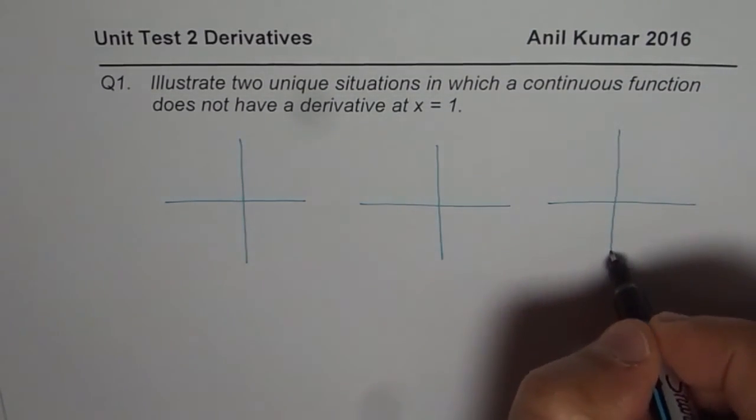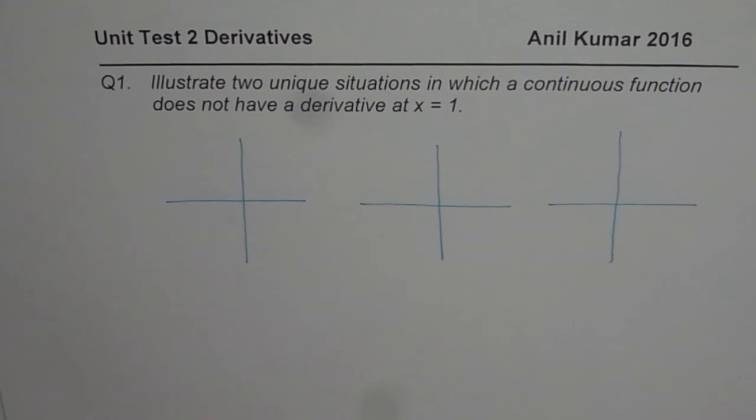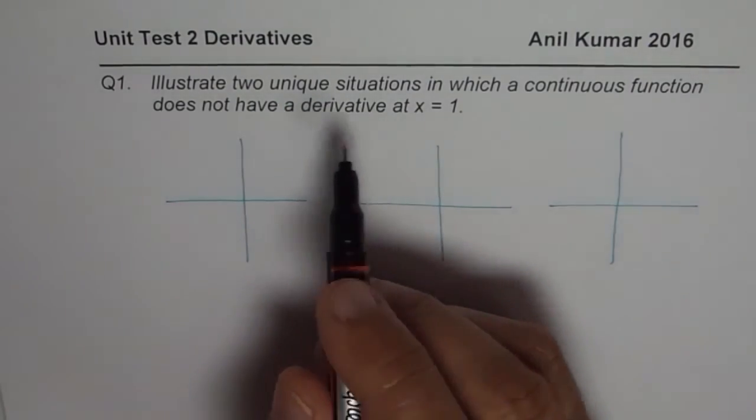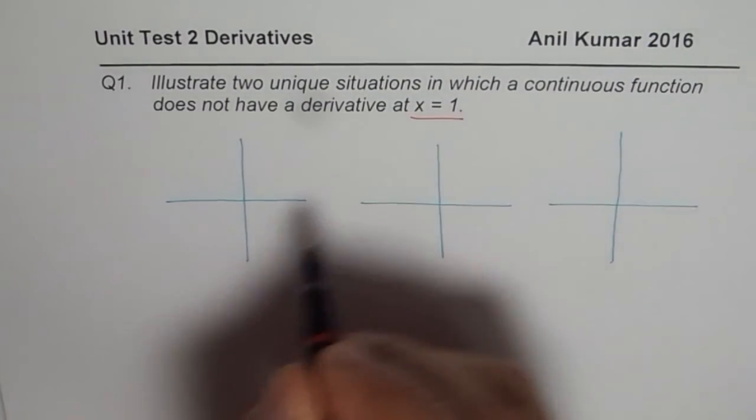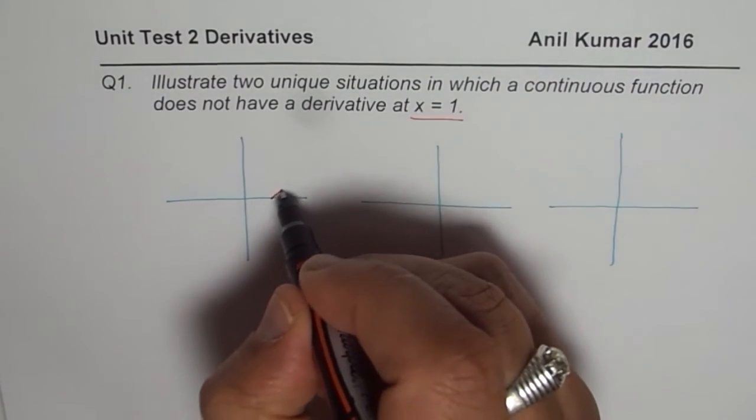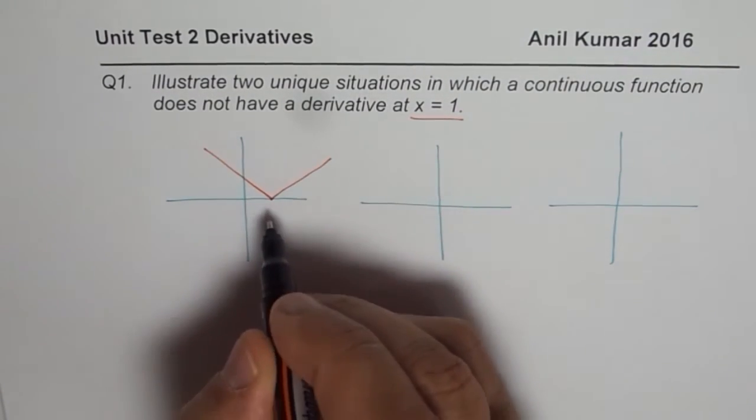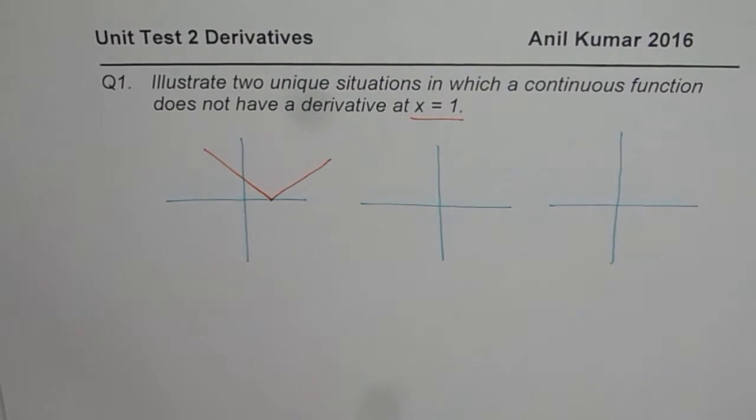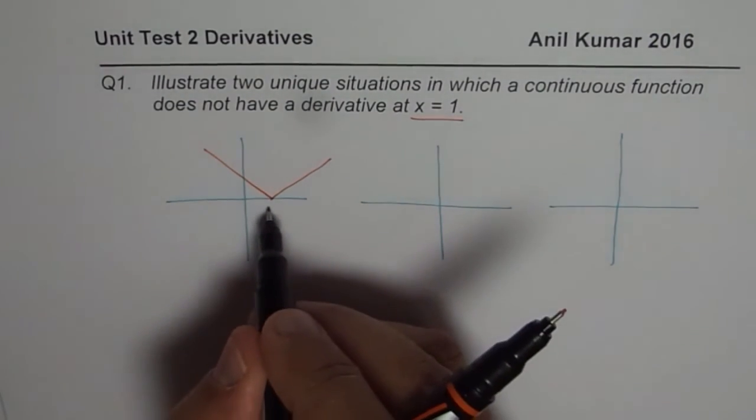So these are three different conditions when a continuous function will not have a derivative. Remember continuous function and the point is at x equals to 1. So we can make absolute x function which has been moved one unit to right. So that could be one of your functions.